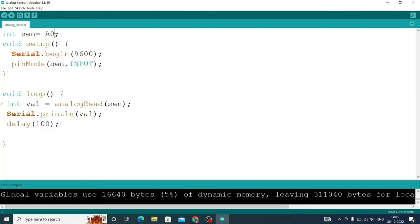In void setup, first I establish serial communication by serial.begin, then I have defined sin as an input pin because we want to use A0 as an input. Then in void loop we are reading the value by the function analog read and in the parameter we are passing the pin number A0.